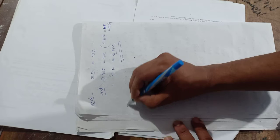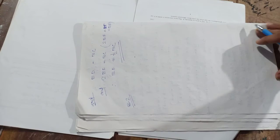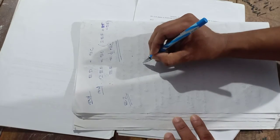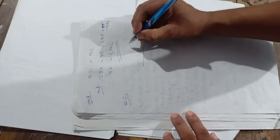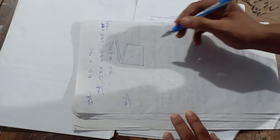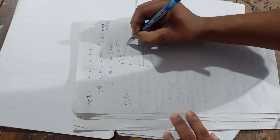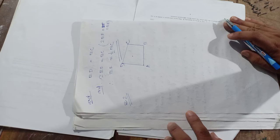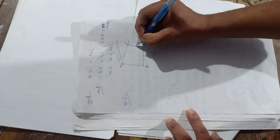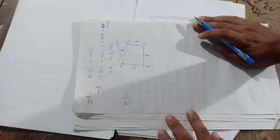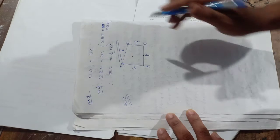Using this theorem, let us solve one question from exercise 8.2. The first question is: ABCD is a quadrilateral. Let us draw the quadrilateral ABCD. PQRS are the midpoints of sides AB, BC, CD and DA respectively.